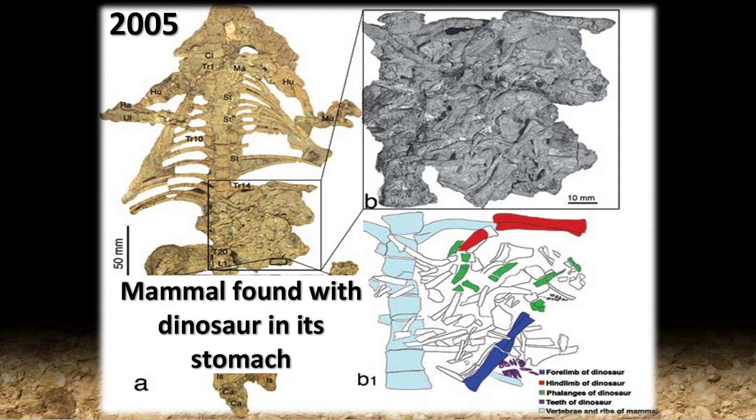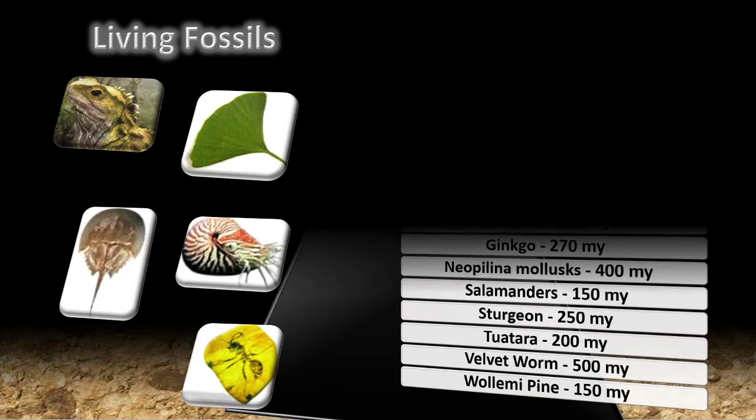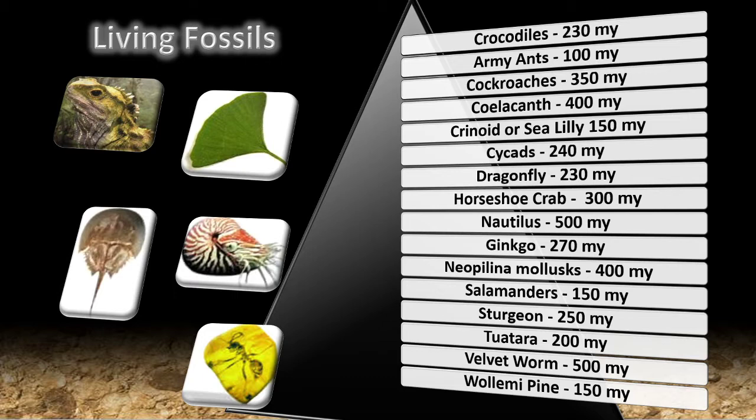In 2005, a mammal was found with a dinosaur in its stomach — a discovery shocking to paleontologists because it was believed that mammals of that size did not exist at the time of the dinosaurs. To convince paleontologists that their interpretations of fossils are incorrect, you will literally have to find one in the belly of another. Another huge problem for the evolutionist interpretation is the abundance of living fossils — organisms found in the fossil record that are still alive today, virtually unchanged.